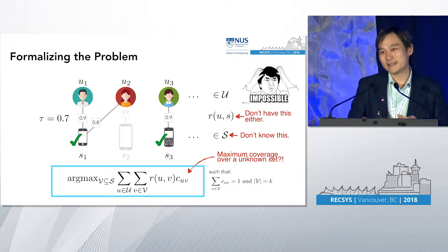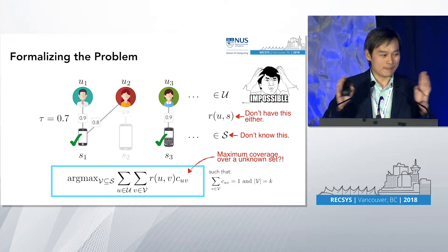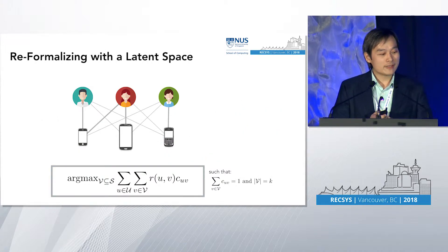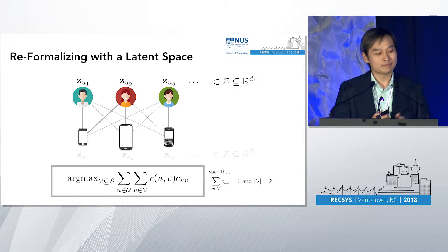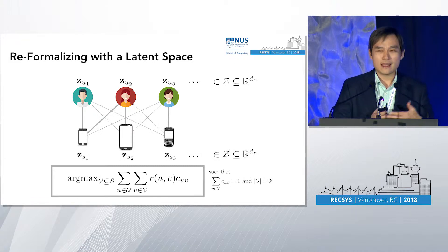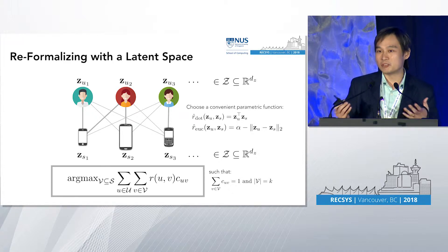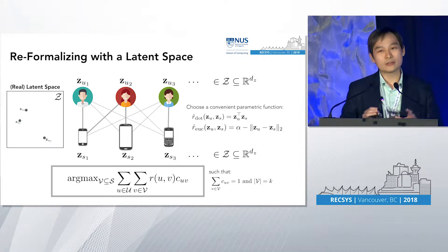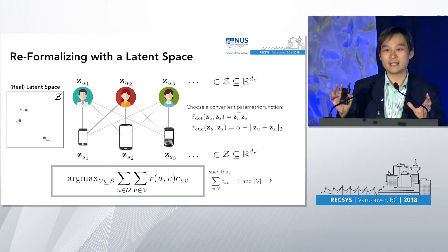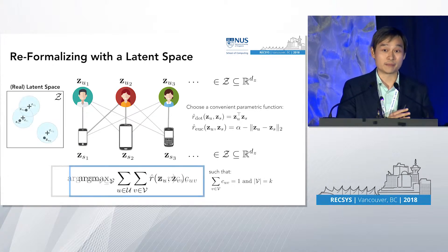I'm going to propose ways to get around this. We're going to leverage our old friend, the latent space. We're going to say each user is represented by a real vector, and similarly for the items. Since we don't really know what the rating function is, let's specify something convenient, like a dot product or a Euclidean distance. The key idea is that we take this unknown discrete set — perhaps of infinite size — and map it to a more convenient real vector space.